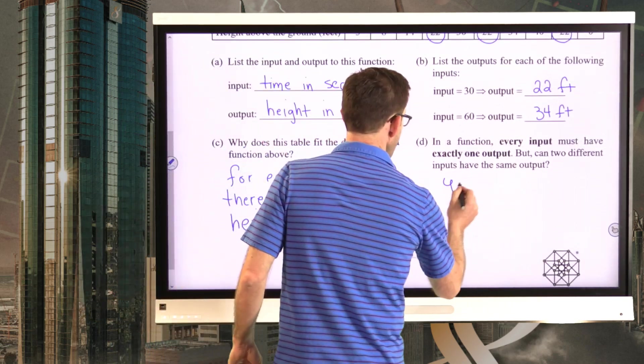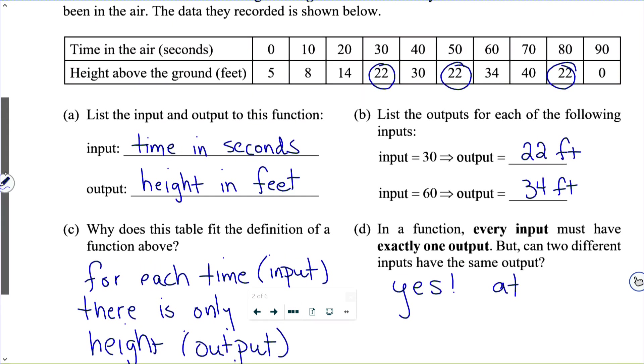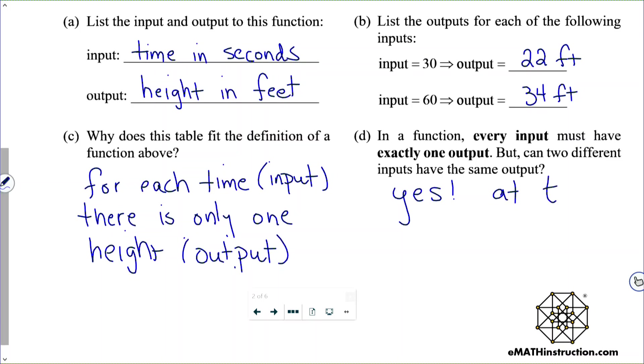And that is completely okay. Yes. At T equals 30, 50, and 80, the height is the same. Or I'm going to say the output.